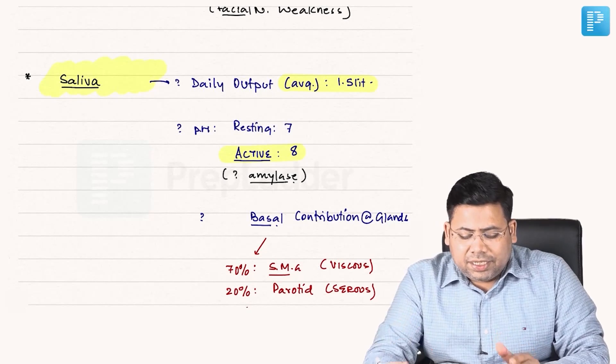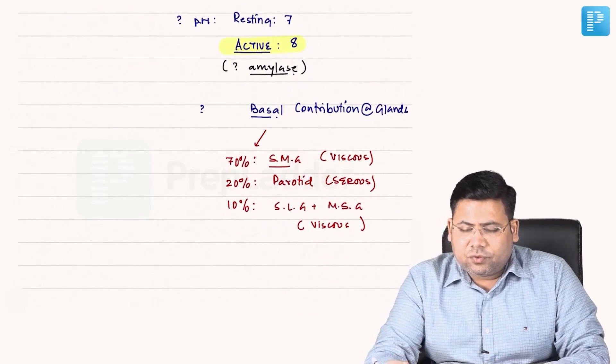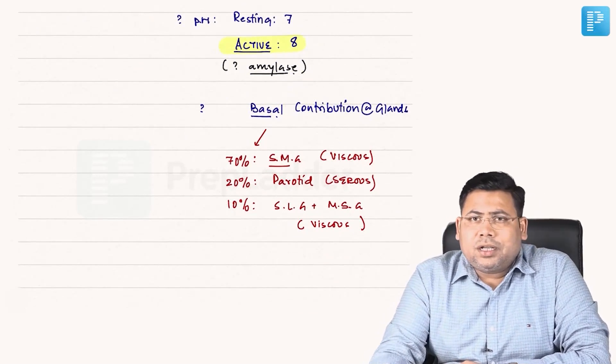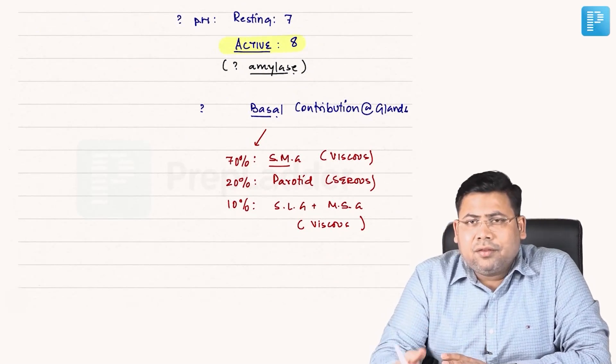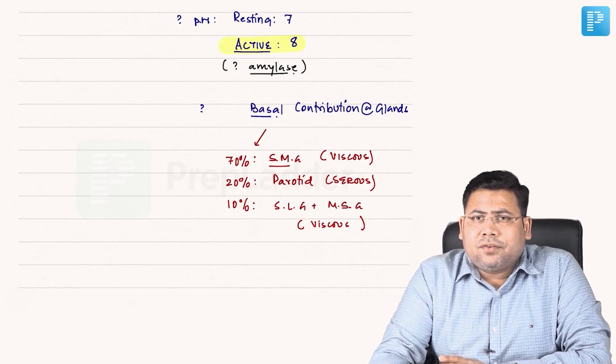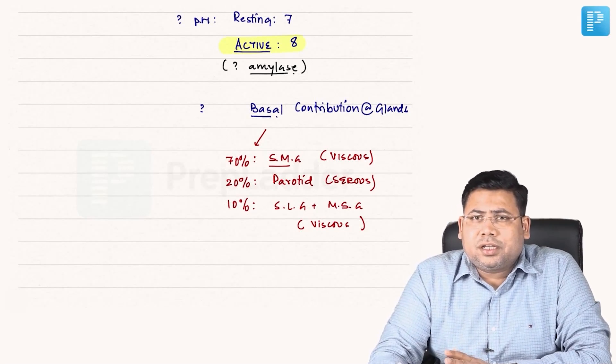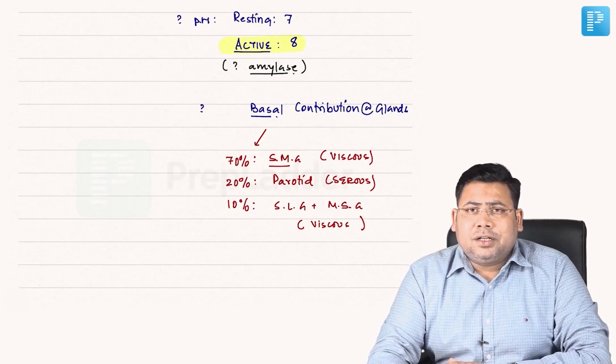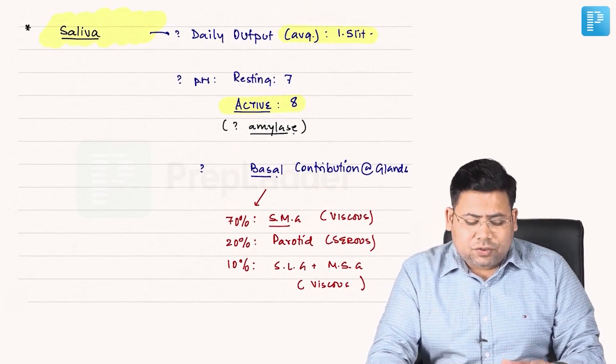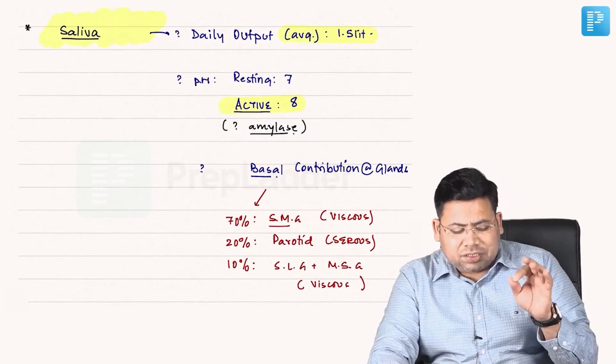So saliva, this is very very important. The daily output I have told, the pH I have told you. Next we have two conditions: we have sialorrhea which is excessive secretion of saliva, and we have xerostomia which is actually the dry mouth which is associated with Sjögren syndrome.